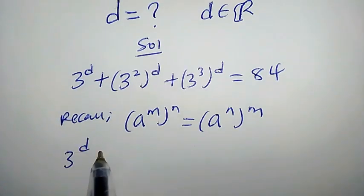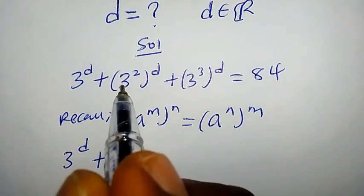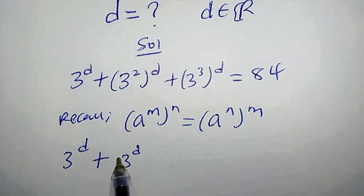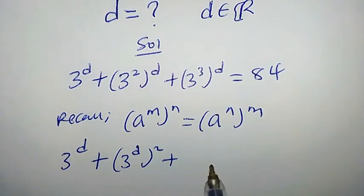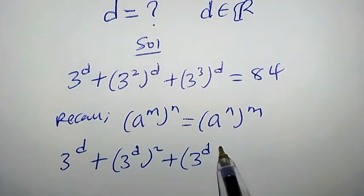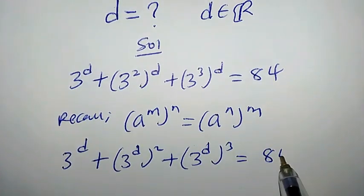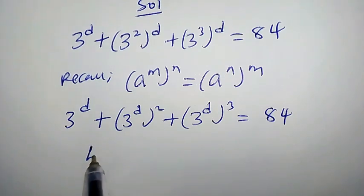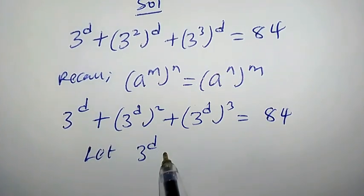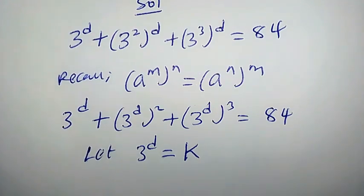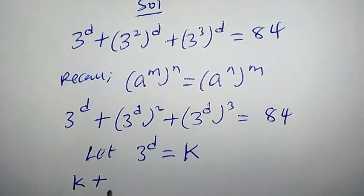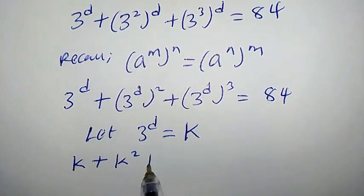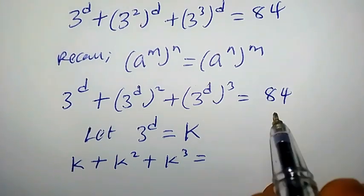Applying this property, 3 to the power of d plus 3 to the power of d times 2 plus 3 to the power of d times 3 equals 84. Now, let 3 to the power of d equal k. That means anywhere we see 3 to the power of d, we replace it with k. So we are going to have k plus k squared plus k cubed equal to 84.